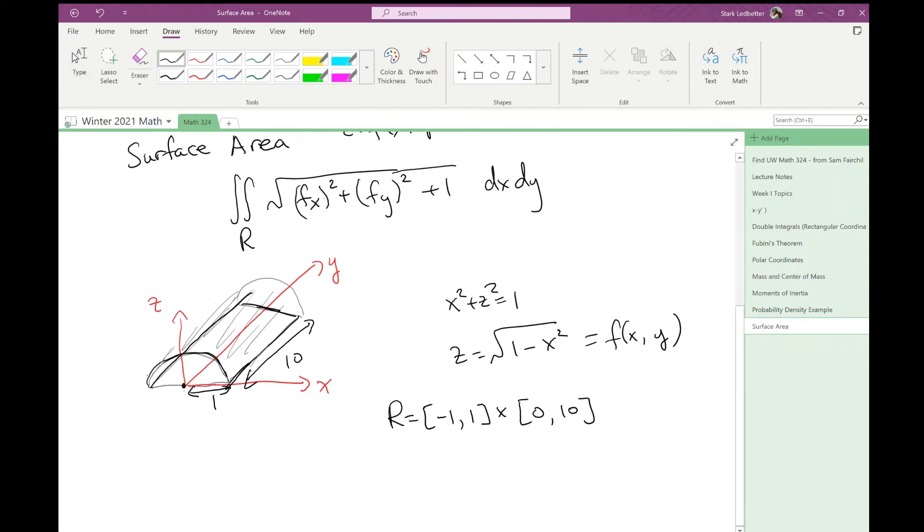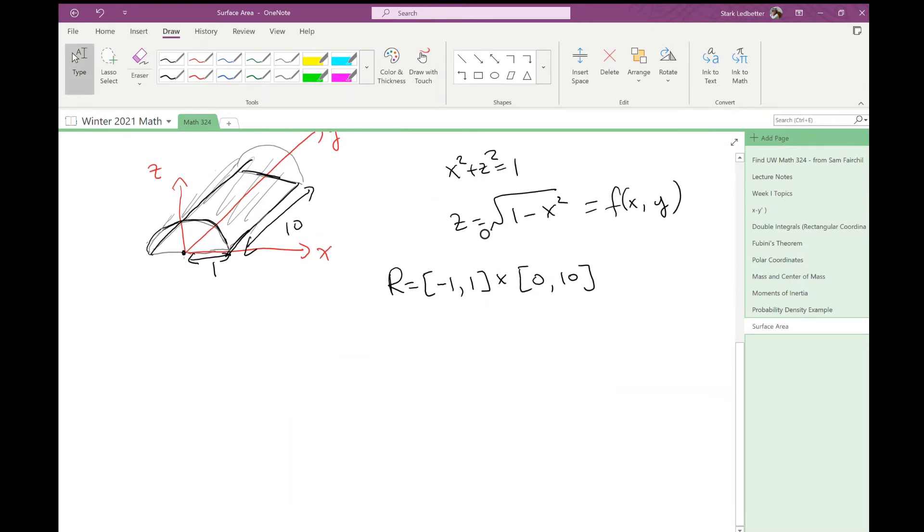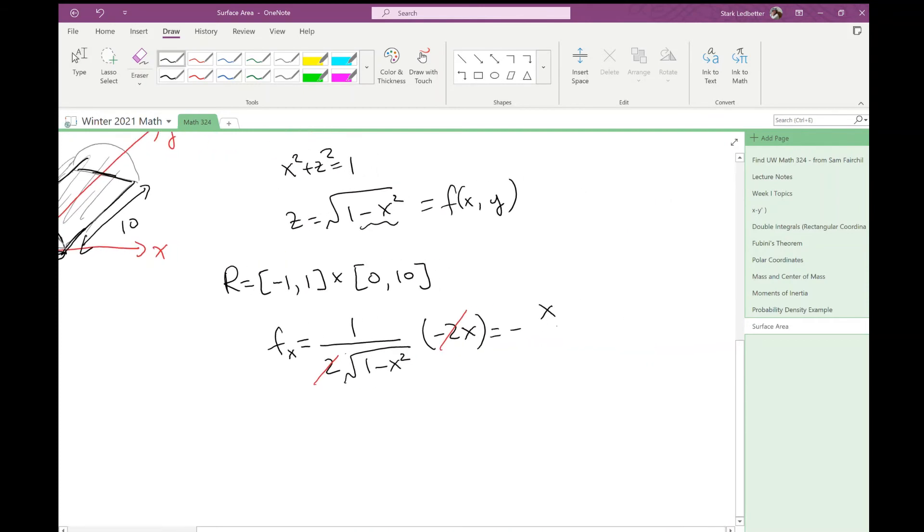Okay, so then I can use my formula. I need the partial derivatives with respect to x and y, so hopefully remember how to do that. Partial derivative with respect to x, I need a chain rule, so it's 1 half, and then it's this thing to the negative 1 half. So it'll be a root on the bottom. And then I need to take the derivative of the inside, which is negative 2x. So actually, these two's cancel. And I'm left with negative x over the root of 1 minus x squared. Okay, and then fy, there's no y's in there, right? No y's in here at all. So fy is 0.